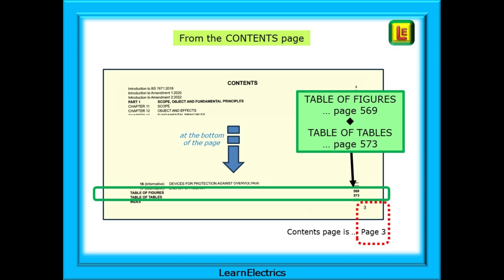Look at the Contents page on page 3 of the Brown Amendment 2 book. At the bottom of page 3, we find an entry for Table of Figures and Table of Contents, telling us that these tables begin on page 569 and 573 respectively. Learn to find these pages quickly, especially if you are studying for an exam.